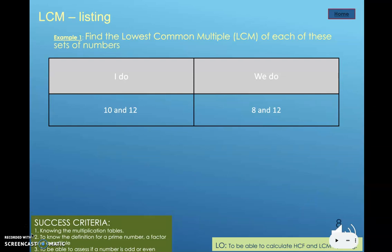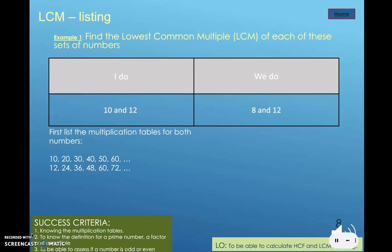As we're looking through this, can we calculate the lowest common multiple of 10 and 12? The first thing we do is list the multiplication tables for both. We then look for the lowest common multiple — the lowest shared multiple. We find that to be 60, so the lowest common multiple of 10 and 12 is 60. Pause the video and give the We Do a go.